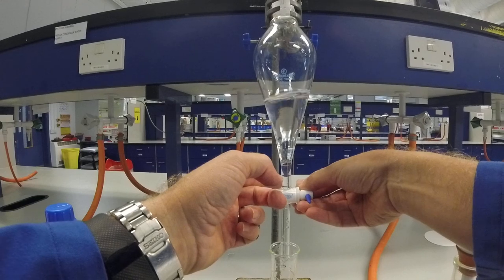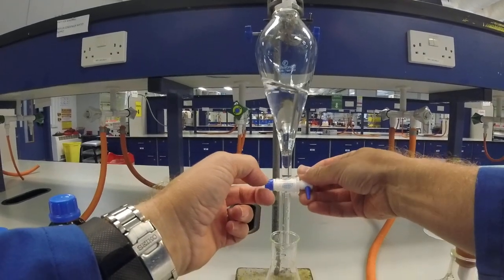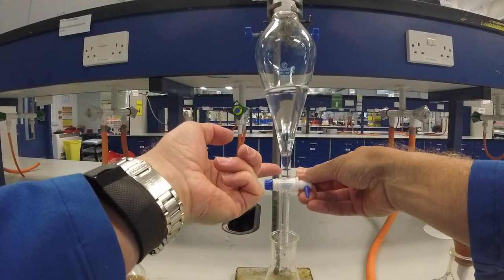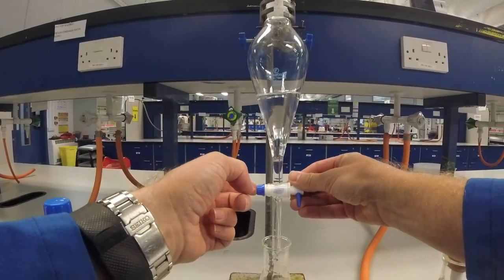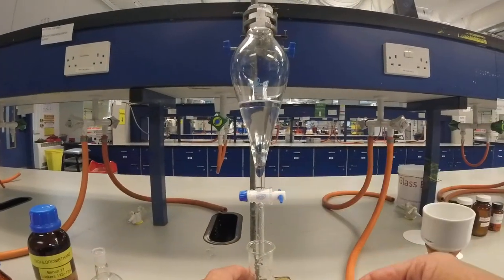Give the separating funnel a little swirl to move anything else down. Sometimes you see that layer go up quite a lot as more water comes out. And then bring it down and cut it off there.